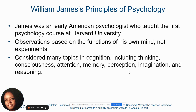After Ebbinghaus' work came William James, who is often thought of as the father of American psychology. He was the first person to teach a psychology course at Harvard University. He liked to observe the functions of the mind — he was a functionalist — and considered topics like cognition, thinking, and imagination as being important. He wanted to know how the brain functioned, not how it was structured.